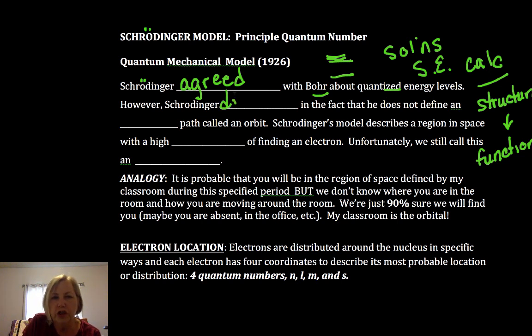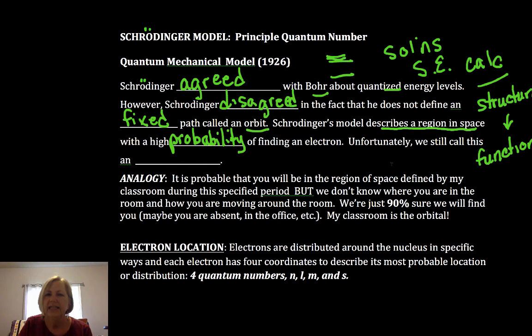However, Schrödinger disagreed in the fact he would not define a fixed path for an orbit around a nucleus. Instead, what we're going to do is describe a region in space where there's a high probability of finding an electron. Now we're going to look at some different levels of structure. And when we get down to the tightest level of structure of defining a region in space, unfortunately it's called an orbital, sometimes called a cloud. I much prefer cloud, an electron cloud over an orbital. I'll often, as an analogy, talk about it as an electron playground, and that region in space where an electron kind of plays and moves and has fun around the nucleus, so to speak.